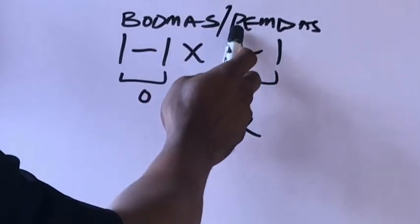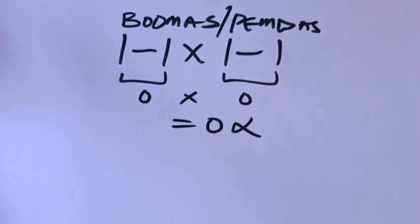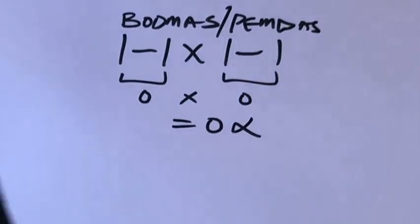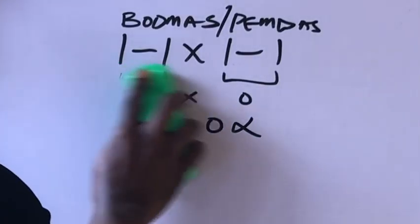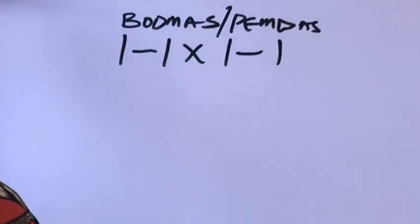So P stands for parenthesis, E stands for exponent, M stands for multiplication, D stands for division, A stands for addition, S stands for subtraction. So if we follow our order of operations, our answer is going to look like this.